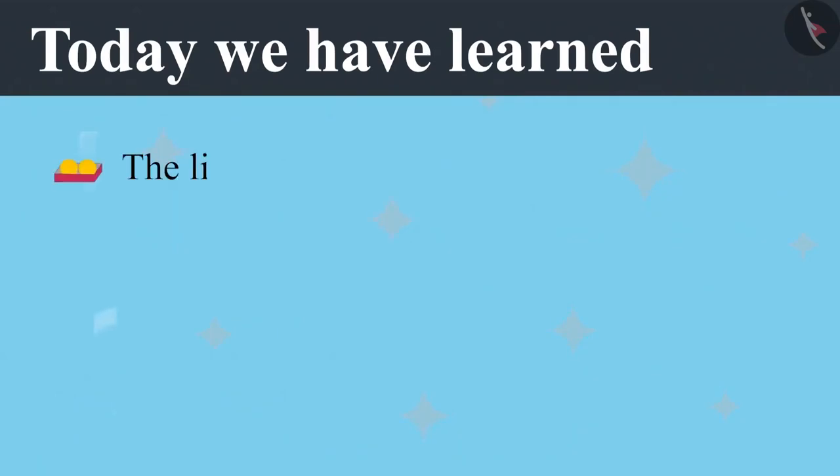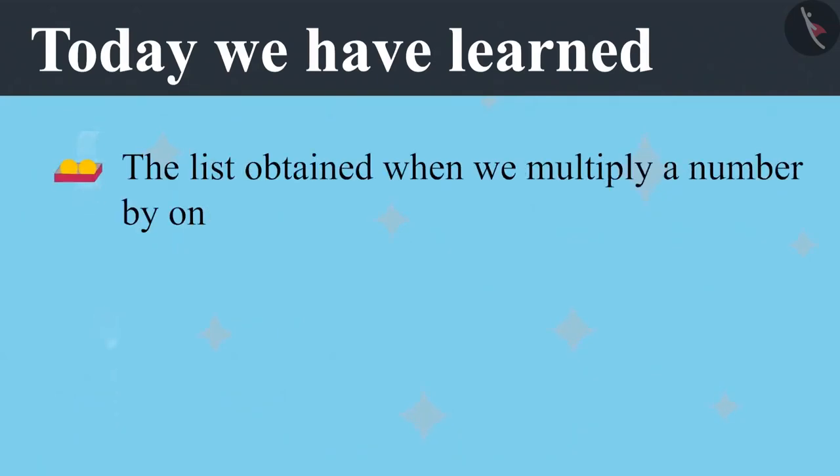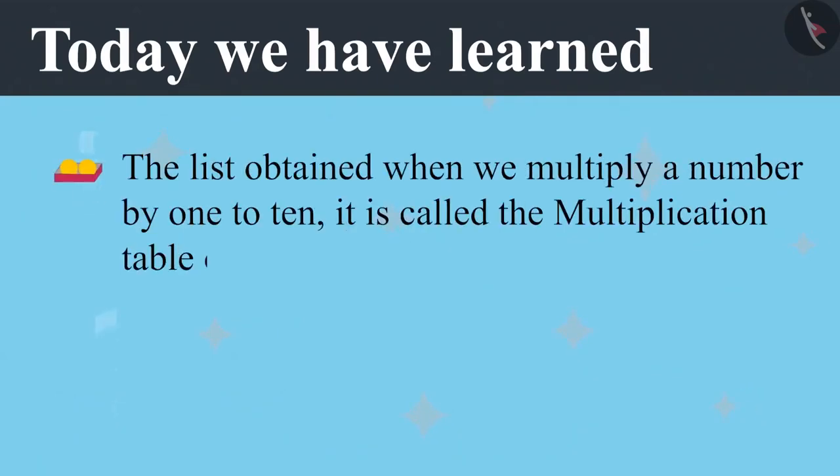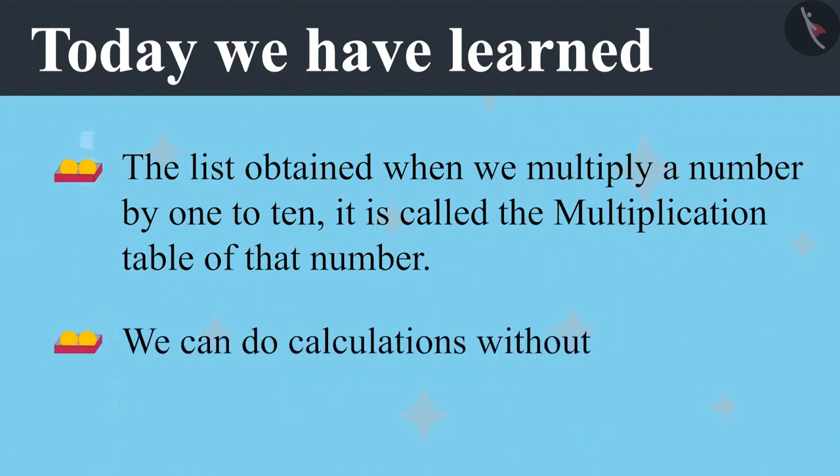Today we have learned that the list obtained when we multiply a number by 1 to 10, it is called the multiplication table of that number. And we can do calculations without a pen and paper if we memorize tables.